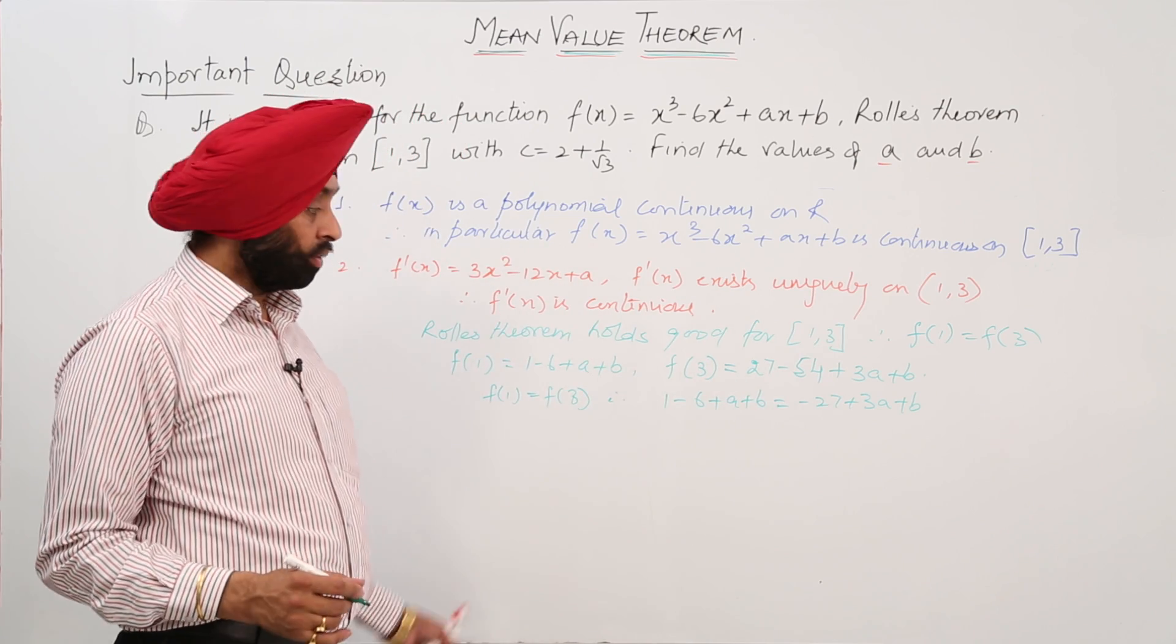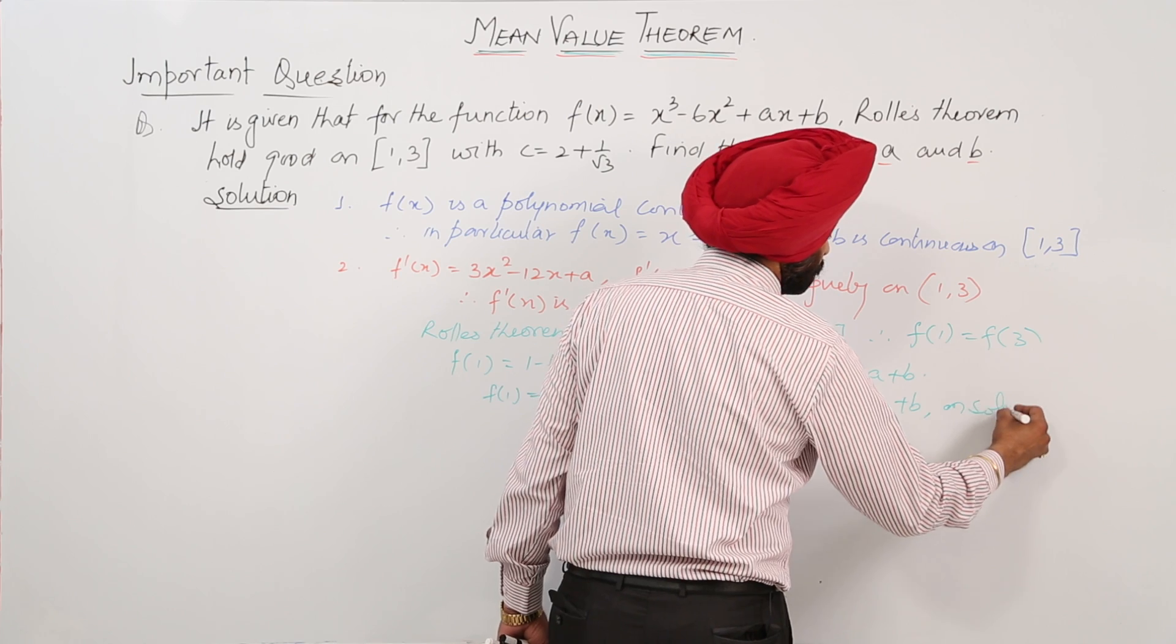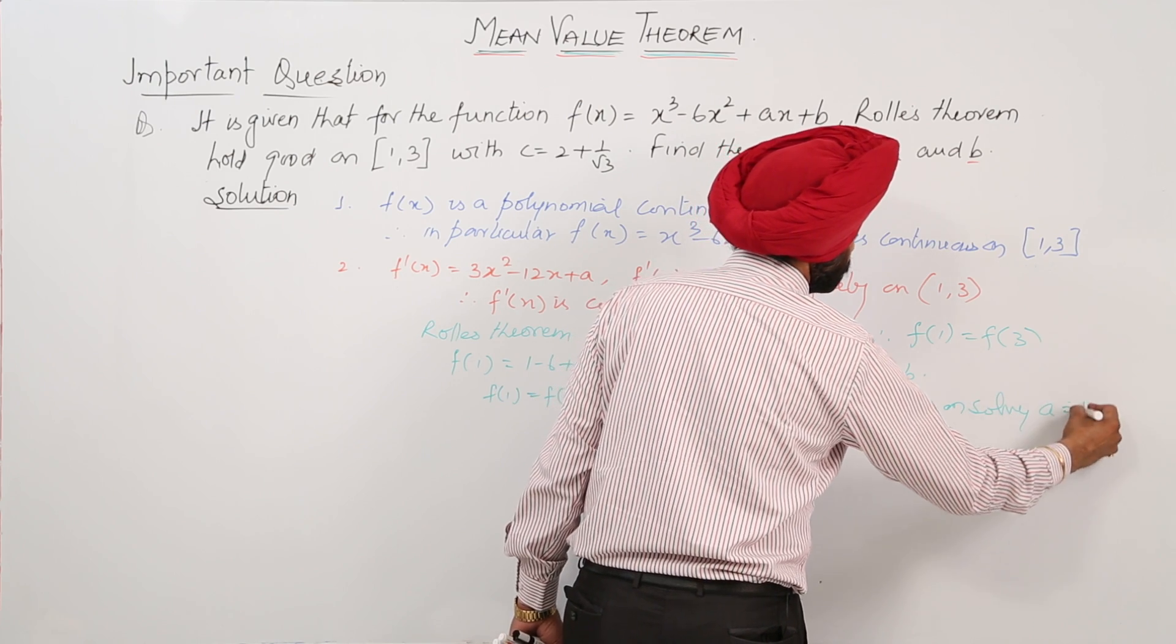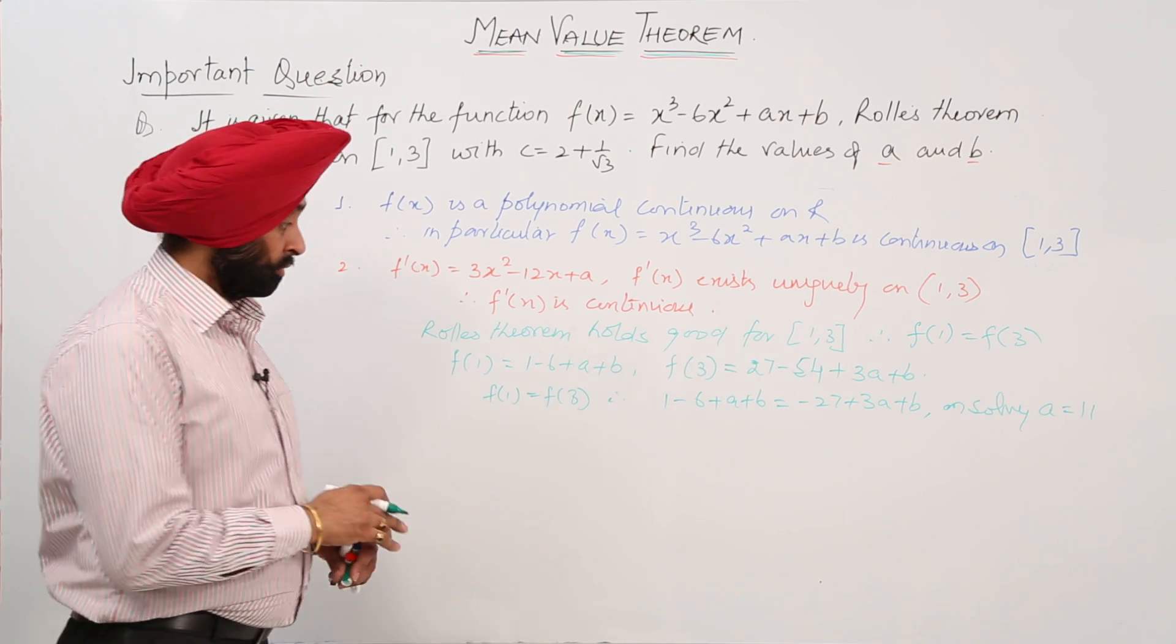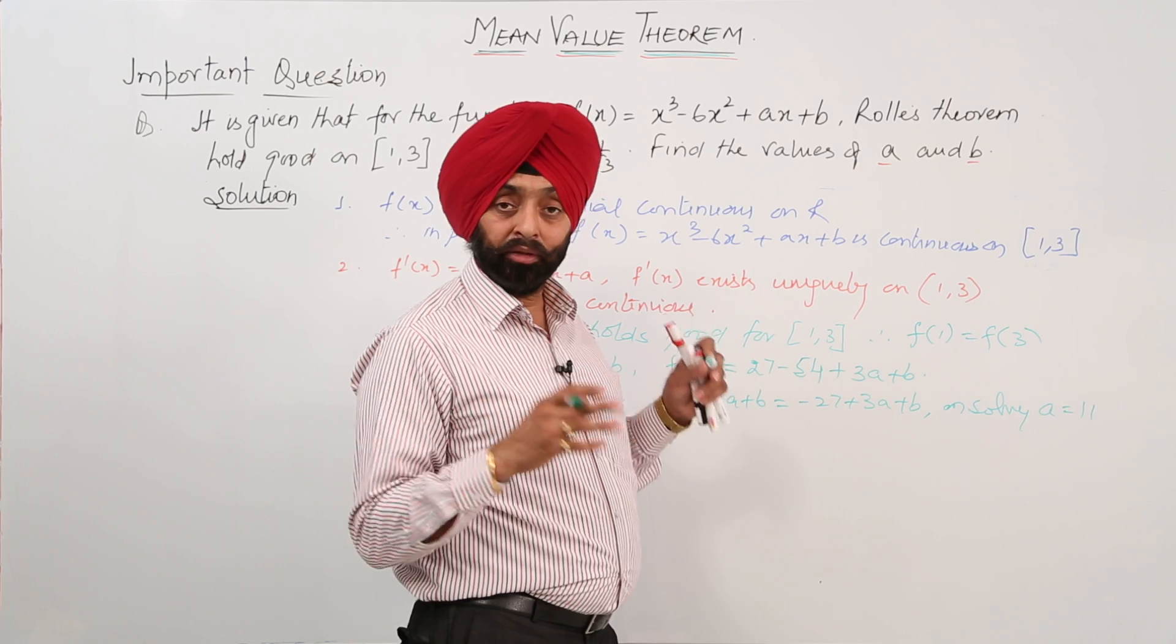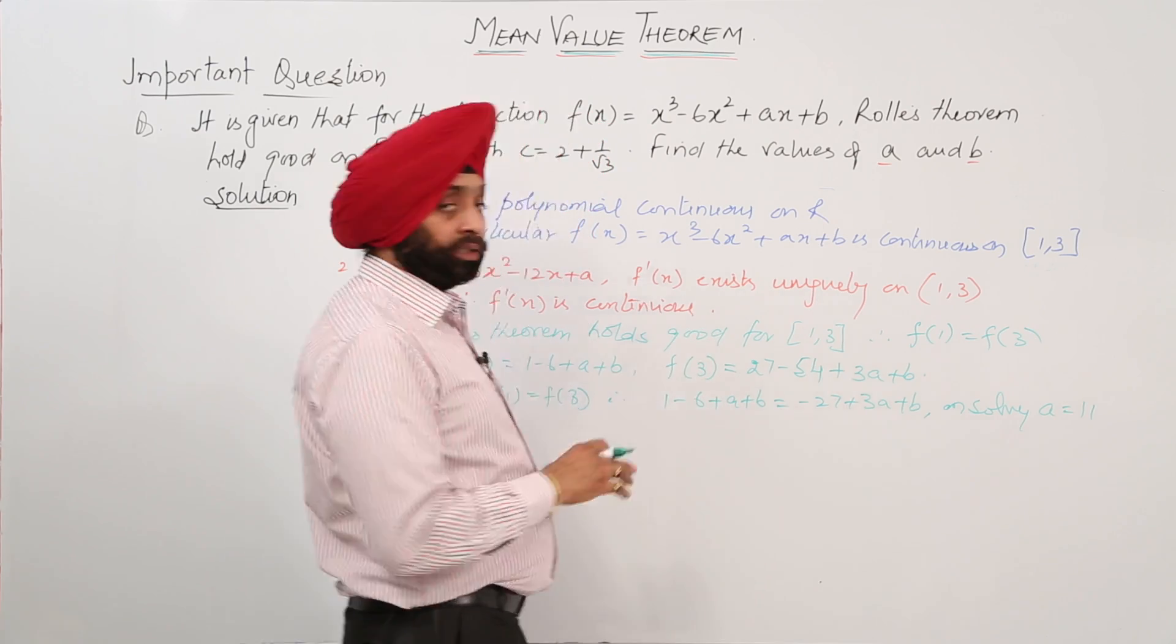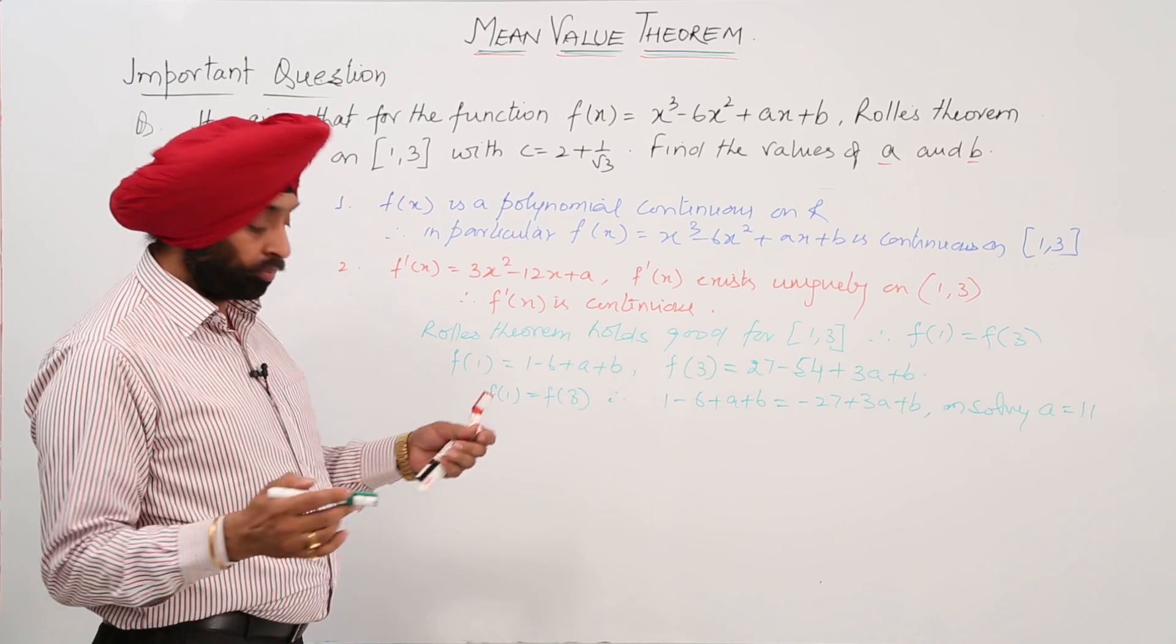On solving, what we are getting? On solving, a = 11. Now, where has b gone? Don't think that we can cancel b. B is an arbitrary constant. We can take any value for b here.